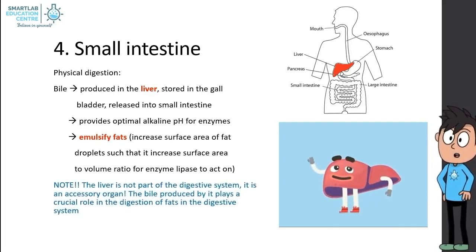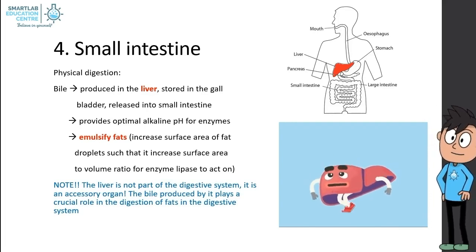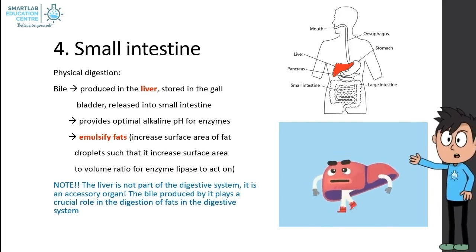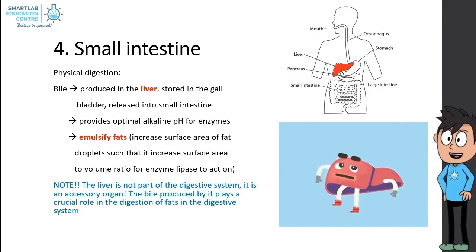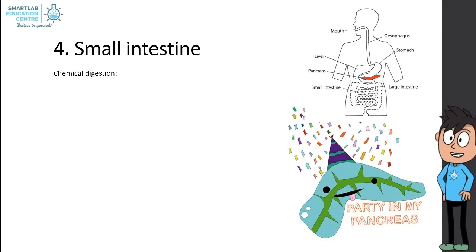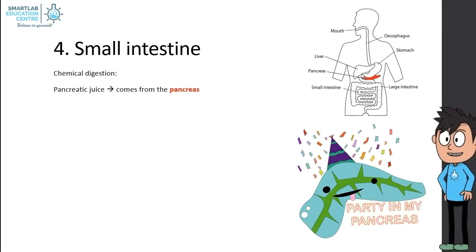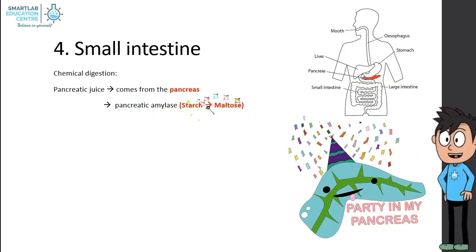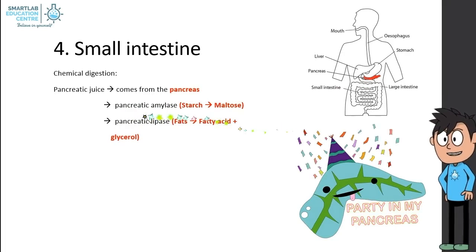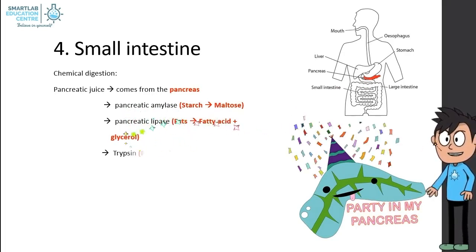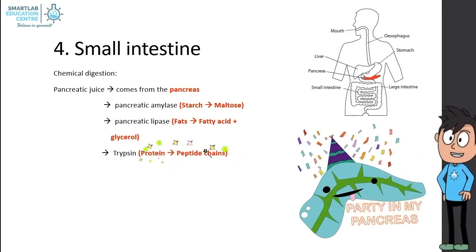Note that the liver is not part of the digestive system — it is an accessory organ, but the bile it produces plays a crucial role in fat digestion. For chemical digestion, pancreatic juice comes from the pancreas and contains three types of enzymes: pancreatic amylase, which breaks down starch into maltose; pancreatic lipase, which breaks down fats into fatty acids and glycerol; and trypsin, which breaks down protein into peptide chains.